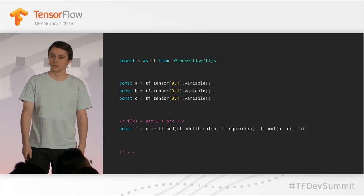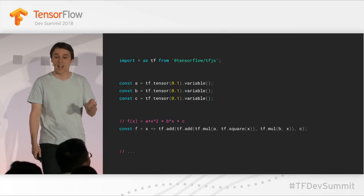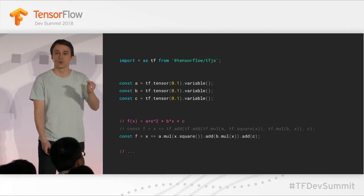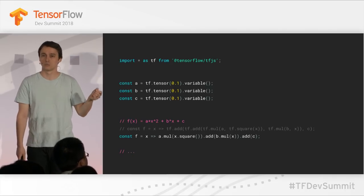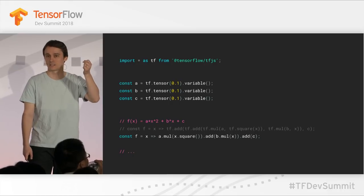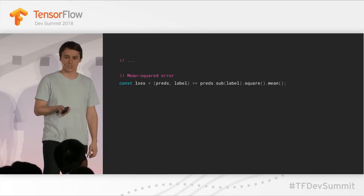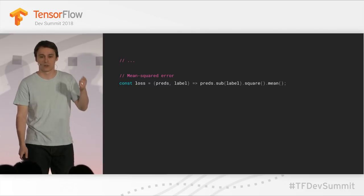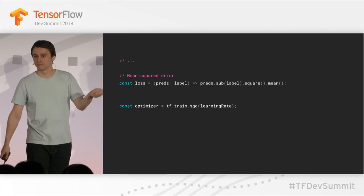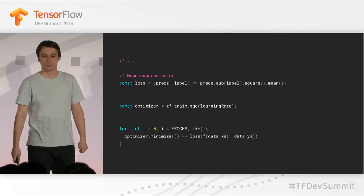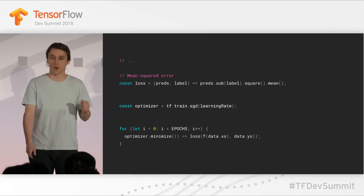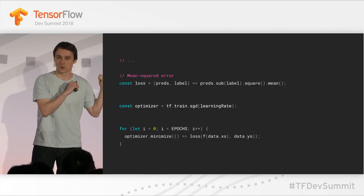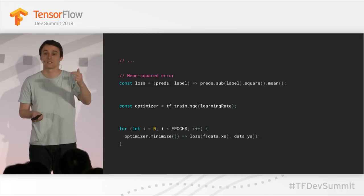We have our f(x) function that does the polynomial computation. You can see familiar API like tf.add and tf.square. We also have a chaining API which lets you call these math operations on the tensors themselves, leading to more readable code that is closer to how we write math — and chaining is very popular in the JavaScript world. For the training part, we need a loss function — a mean squared error between the prediction and the label — and an SGD optimizer. We call optimizer.minimize for some number of epochs. The API in TensorFlow.js is aligned with the eager API in Python.